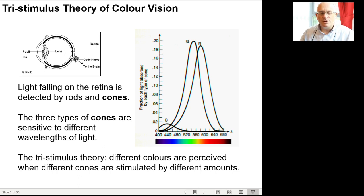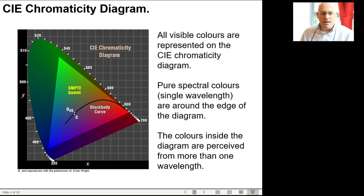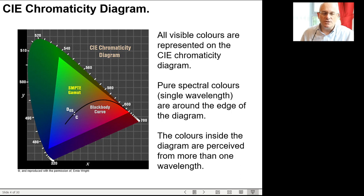This tristimulus theory of color vision has been used for almost all electronic displays. The CIE chromaticity diagram, shown here, displays all possible visible colors in that horseshoe shape — the spectral or pure spectral colors are at the outer edge. In the middle there are mixtures of wavelengths that give rise to other sensations, and at the very center there is white, a mixture of essentially red, green, and blue components.